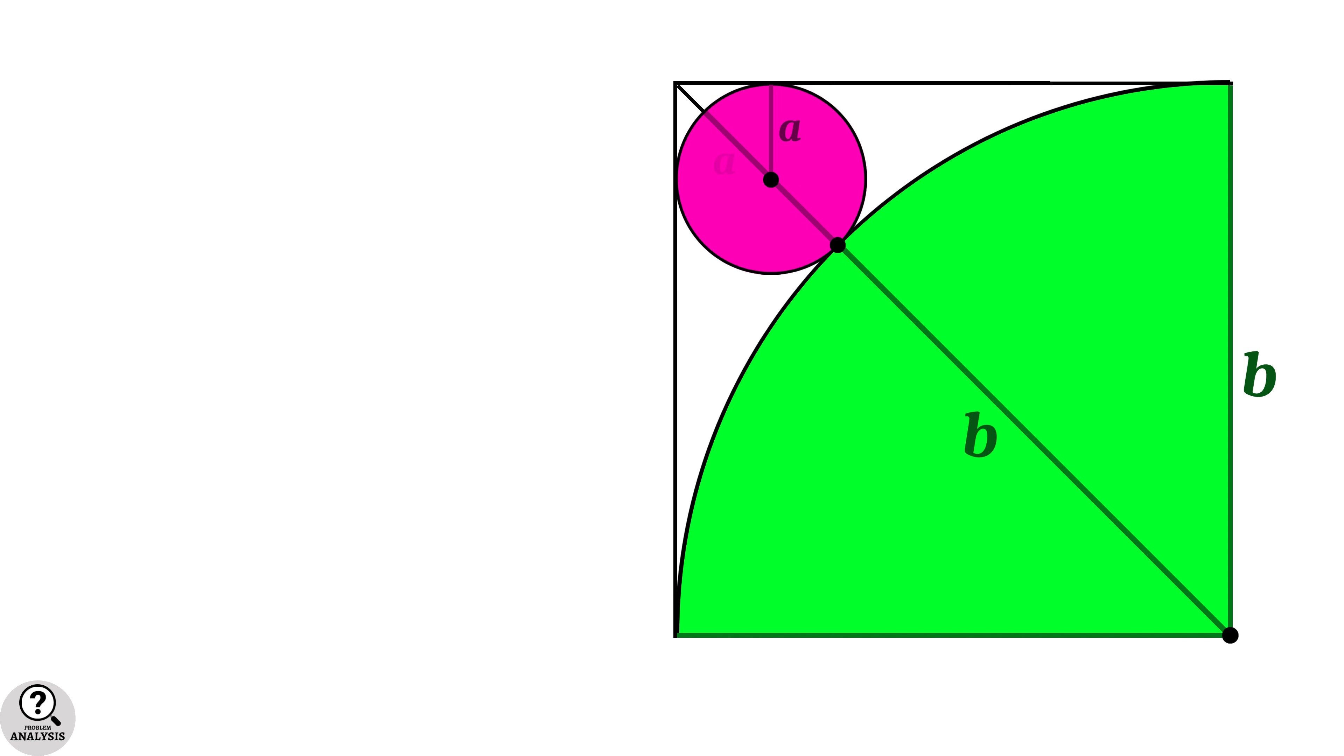So they both are a units. Now a small piece is remaining. Let's say it has x unit length. Why we are doing all this is because we can solve for x in terms of a and b in two different ways. So by equating them, we can calculate the ratio b/a.